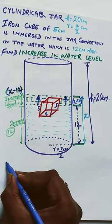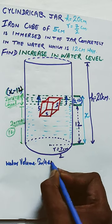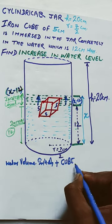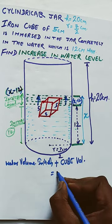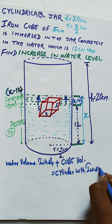Now what is the volume initially? That will be added up with the volume of cube, which will lead to the final volume of the cylinder with extended level of water.